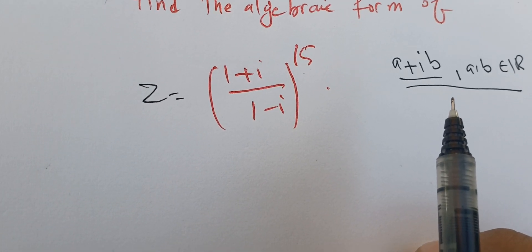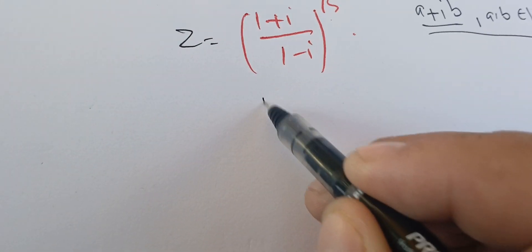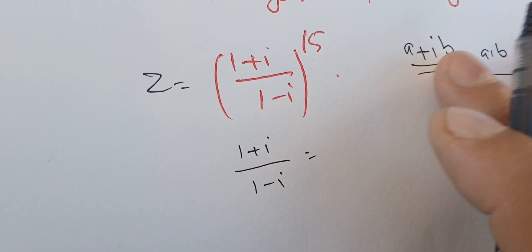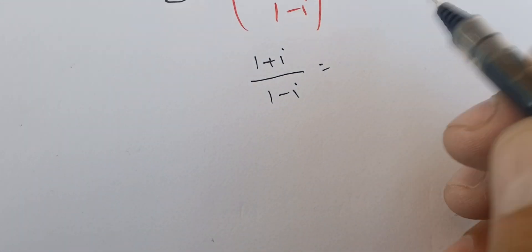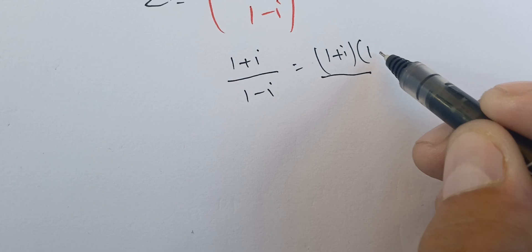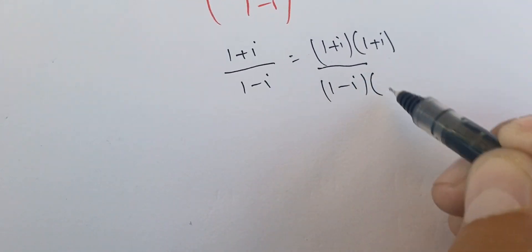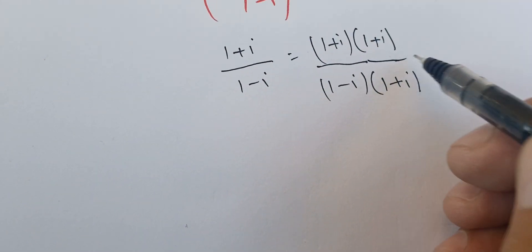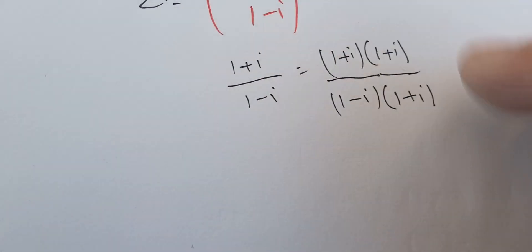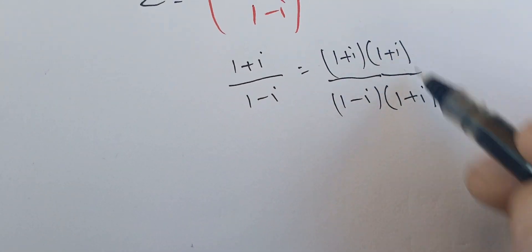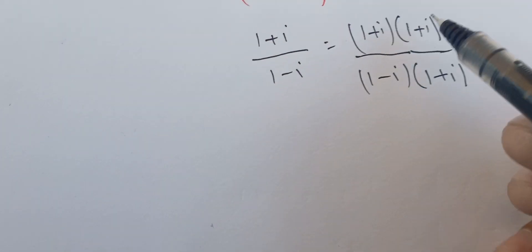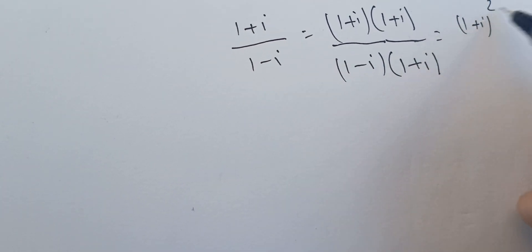So we have (1+i)/(1-i). We can simplify this by multiplying by the conjugate. We write (1+i)×(1+i) over (1-i)×(1+i). I applied the trick of multiplying and dividing by the same number, 1+i, so it's like I did nothing. I notice that the top is (1+i)² and the bottom is (1-i)×(1+i).